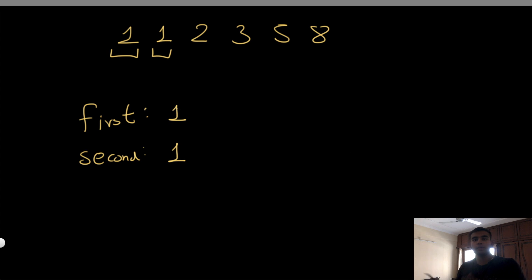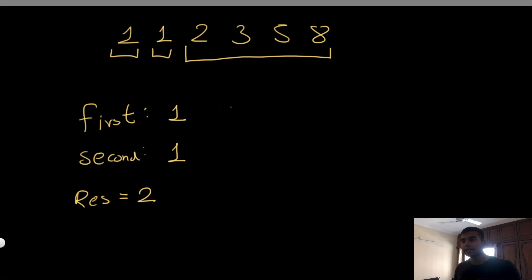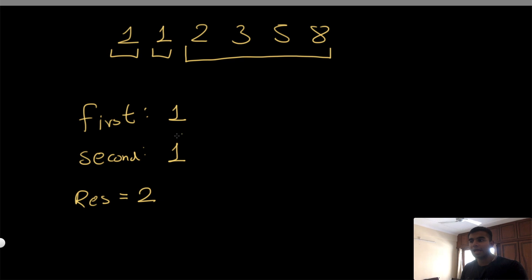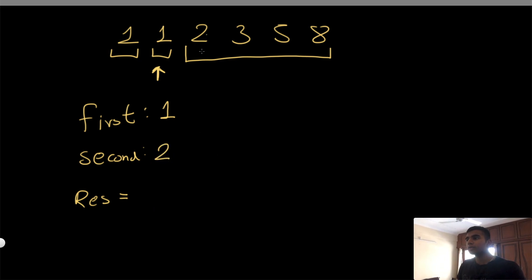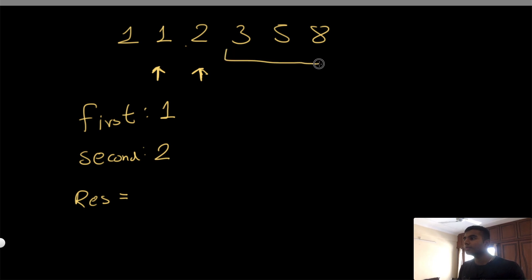Now that we know the first and second numbers, we can do an iterative process. We have the first and second number, and we look at what the result is — in this case the result is two. Now we check if the result appears at the beginning of the remaining numbers. Two is there, so far it is an additive sequence. Now the second number becomes the new first number.